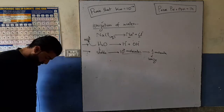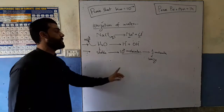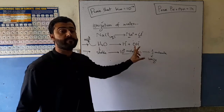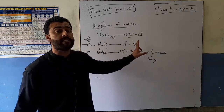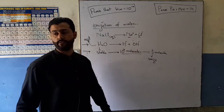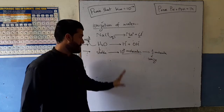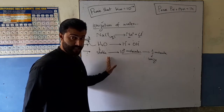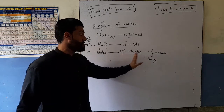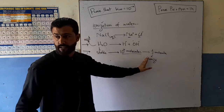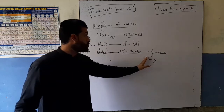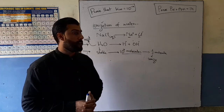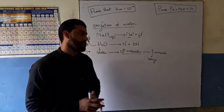It is only 1 out of 10 to the power of 7 molecules that ionizes. We need to know that the hydrogen ion and hydroxyl ion concentration can be determined from this. Only one molecule out of 10^7 ionizes.